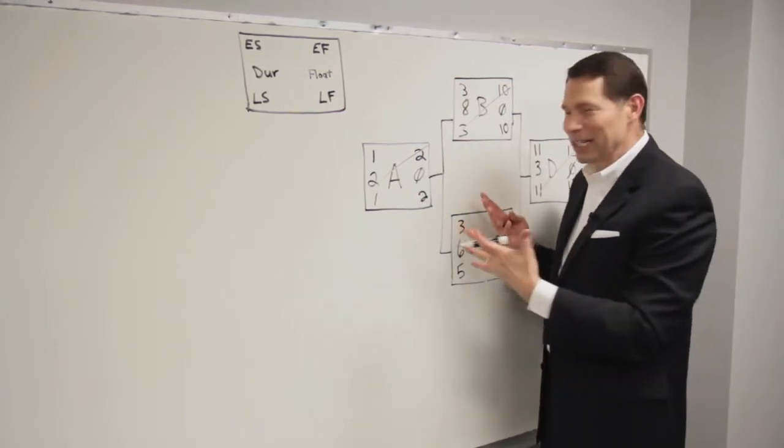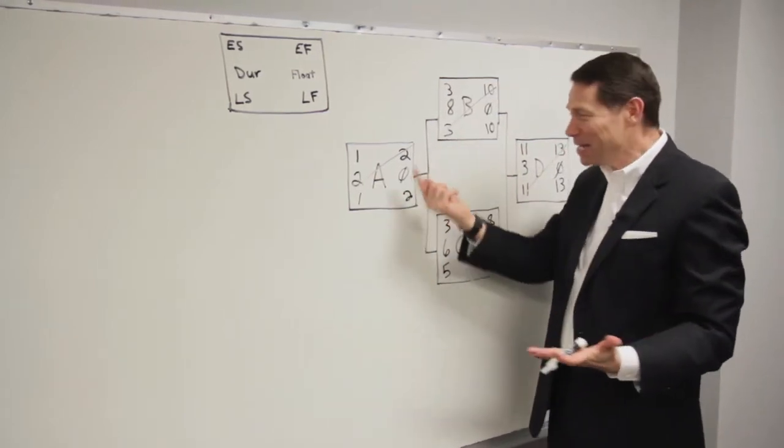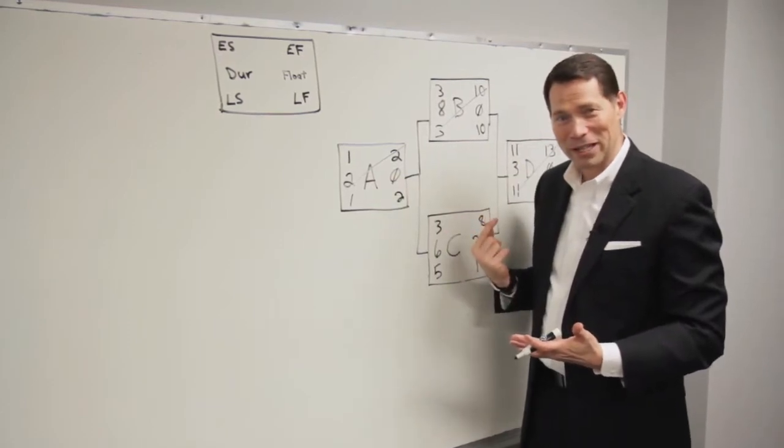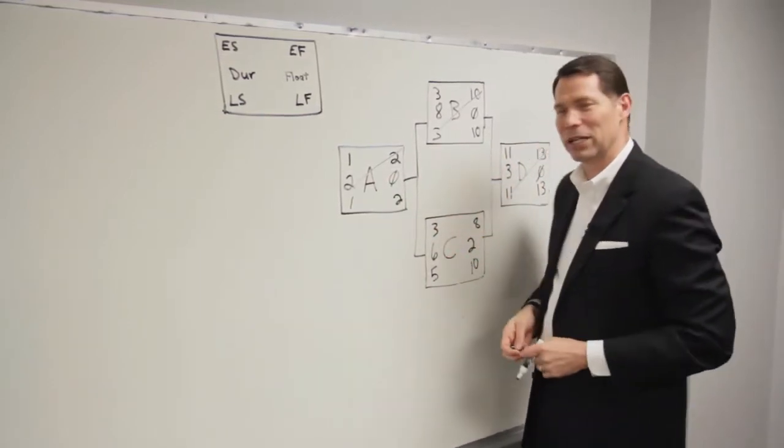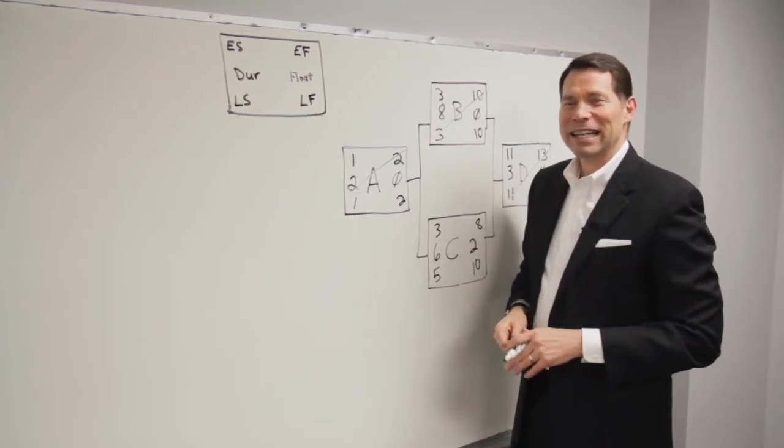For a small project, we kind of knew that. About five minutes ago, we kind of knew what the critical path was. But by doing it by hand, we can actually see. We can prove that that has two days of float.